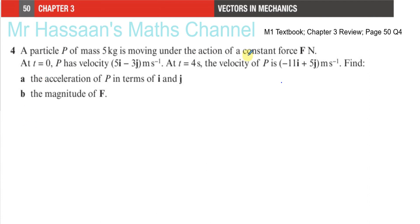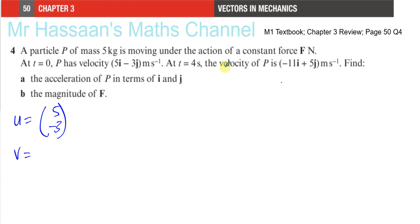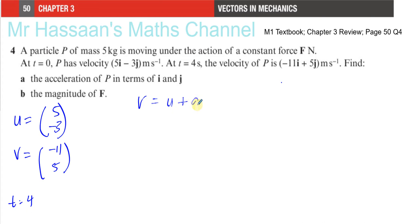We have a constant force, so therefore we have a constant acceleration. We know the velocity at 0, which is the initial velocity, 5i minus 3j. I like to use column vectors for my working out. We know the velocity after 4 seconds is V = minus 11i plus 5j. We know time is 4 seconds, so we can use the equation of motion V equals U plus AT.